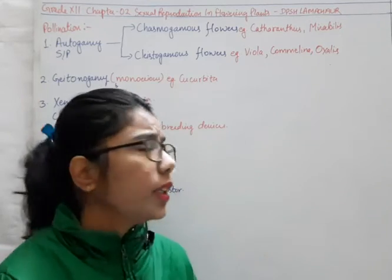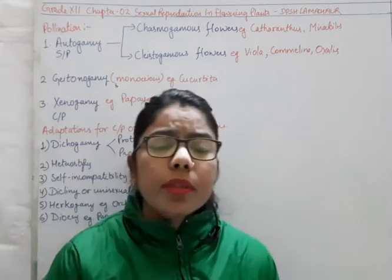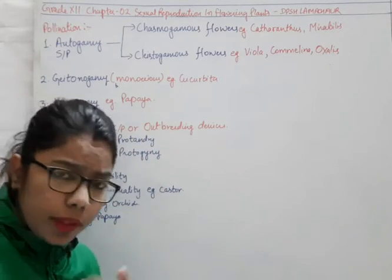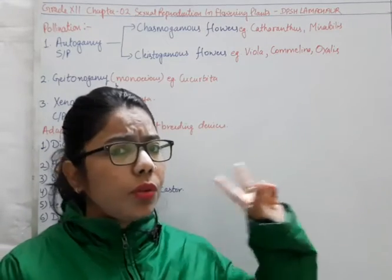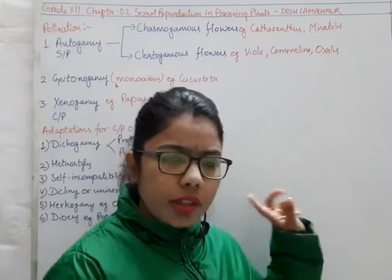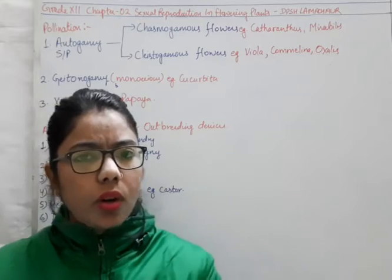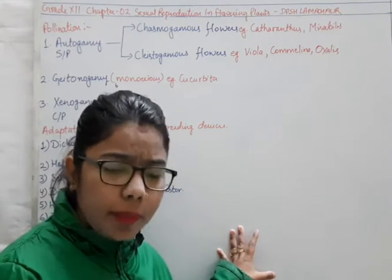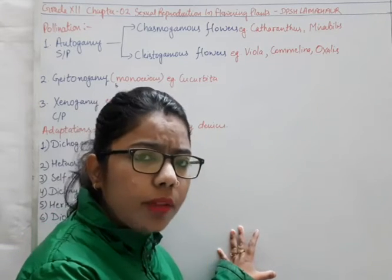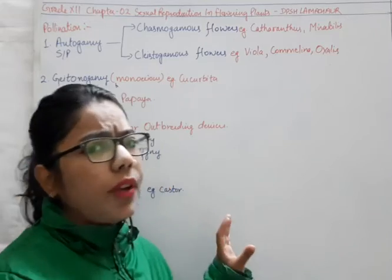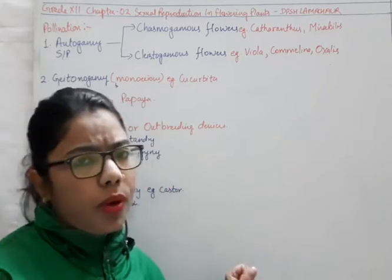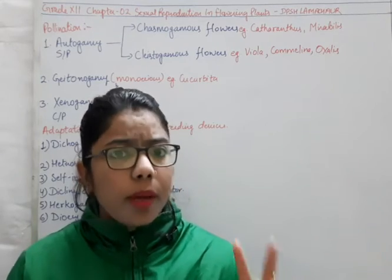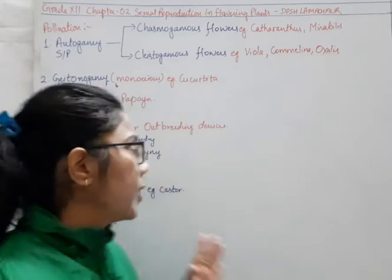Today we are going to study how this pollination takes place. We have broadly classified pollination into types: autogamous and geitonogamous, and also xenogamous. In previous classes, we classified it as self-pollination and cross-pollination. Self-pollination is when both the male and female reproductive units are present in the same flower. Cross-pollination is when two different flowers from two different plants are involved.